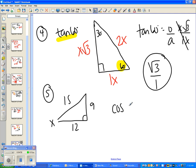Cosine of x is the same thing as the adjacent over the hypotenuse, so adjacent would be 12, hypotenuse would be 15. So 12 over 15, and you can reduce that, but it didn't really ask you to. So that's how you do number 5.